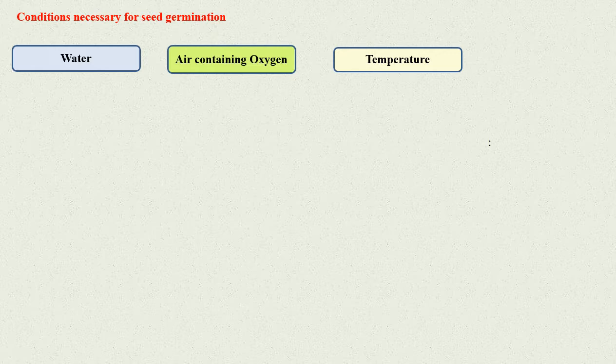Conditions necessary for seed germination: Environmental factors such as water, air, and temperature help a seed in its germination process.